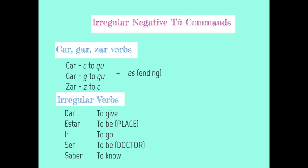Just like any other tense or mood in Spanish, there are always irregulars. When working with negative tú commands, we've got to watch out for CAR, GAR, and ZAR verbs — the same spelling changes you worked with in the preterite will show up here too. If a verb ends in CAR, the C changes to QU before you add the ending. For GAR, the G changes to GU before adding the ending. For ZAR, the Z turns into a C before adding the ending. These are all AR verbs, so they all get the ending -ES.